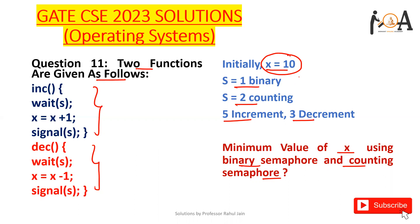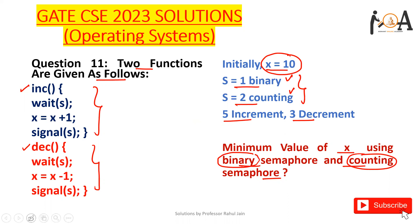We have two semaphores — one is binary and the other is counting. We have an increment function and a decrement function. Our goal is to find the minimum value of x using the binary semaphore and then using the counting semaphore.